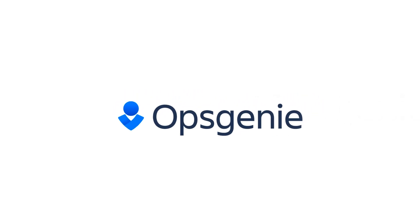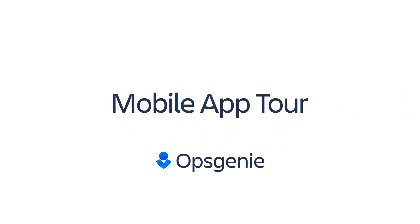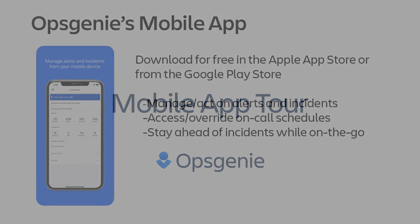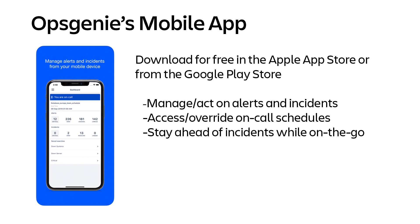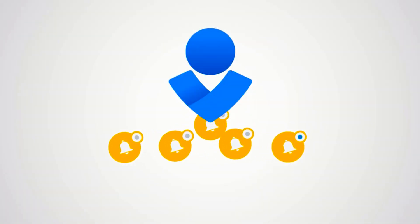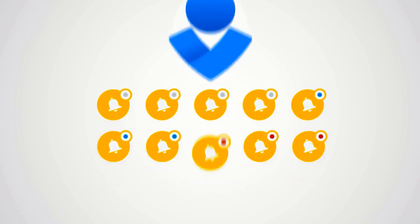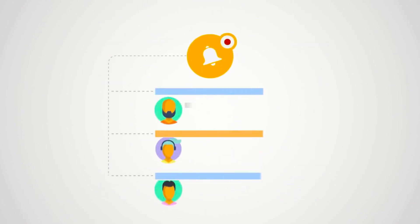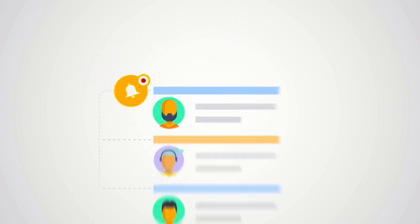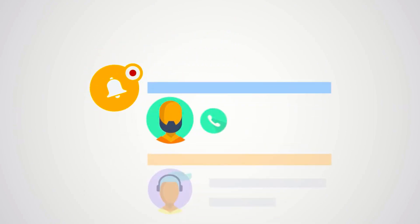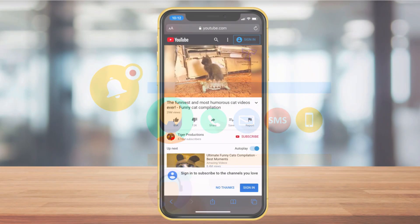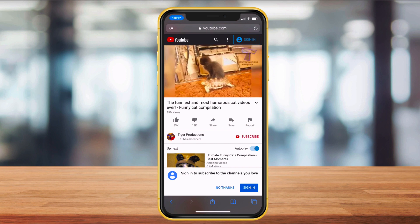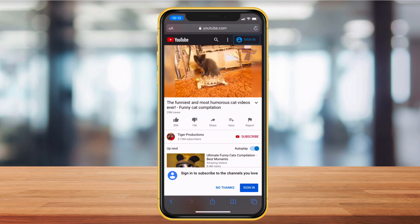This video takes a complete tour of Opsgenie's mobile app, available for both iOS and Android. Easily manage alerts, incidents, on-call schedules, and more. Opsgenie is a modern incident management solution that aggregates alerts and utilizes on-call schedules, routing rules, and escalation policies to notify the right people at the right time. Our mobile app empowers responders to live life without missing important alerts and incidents.